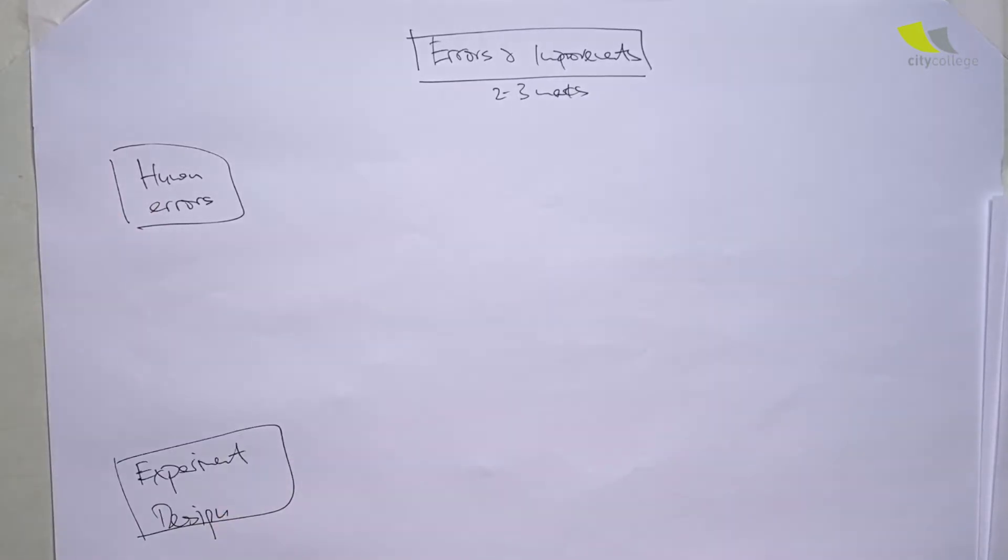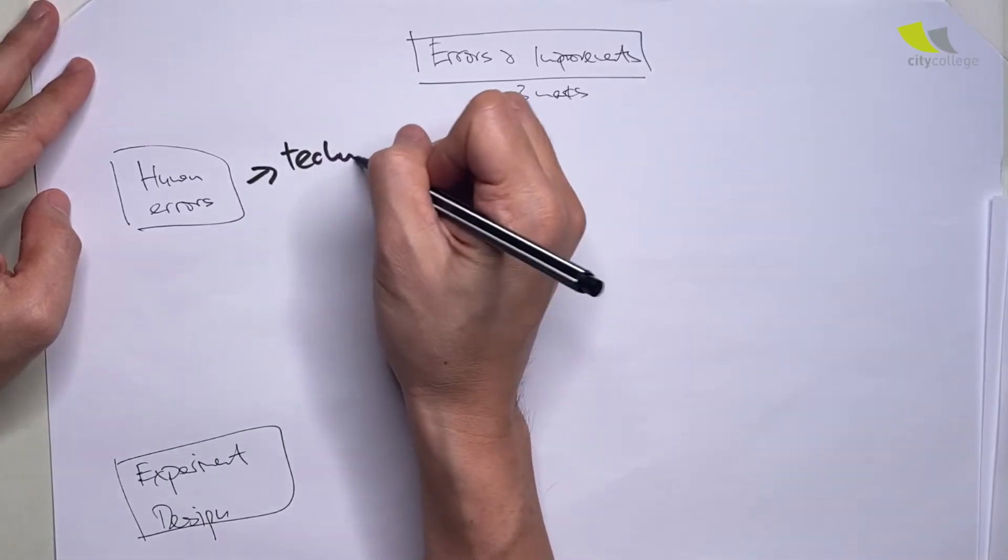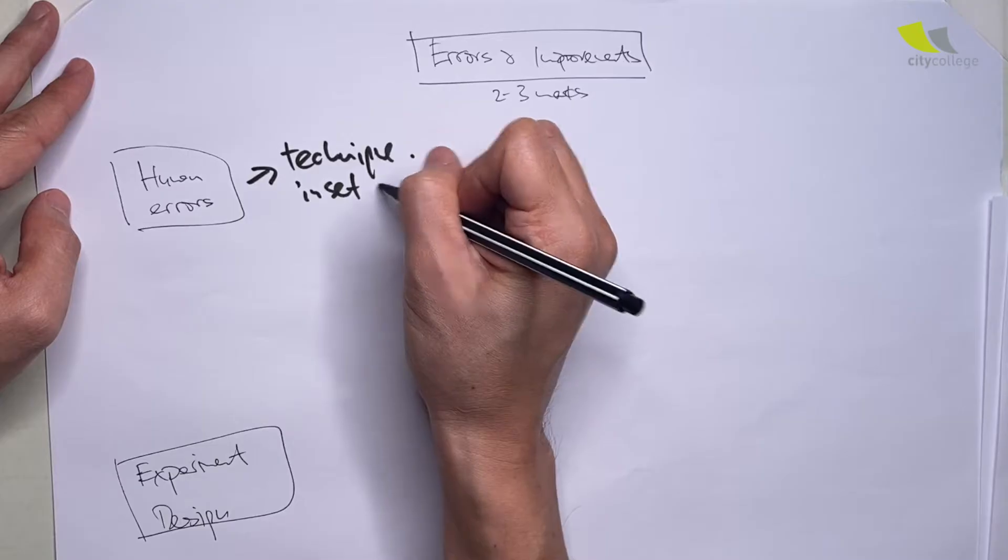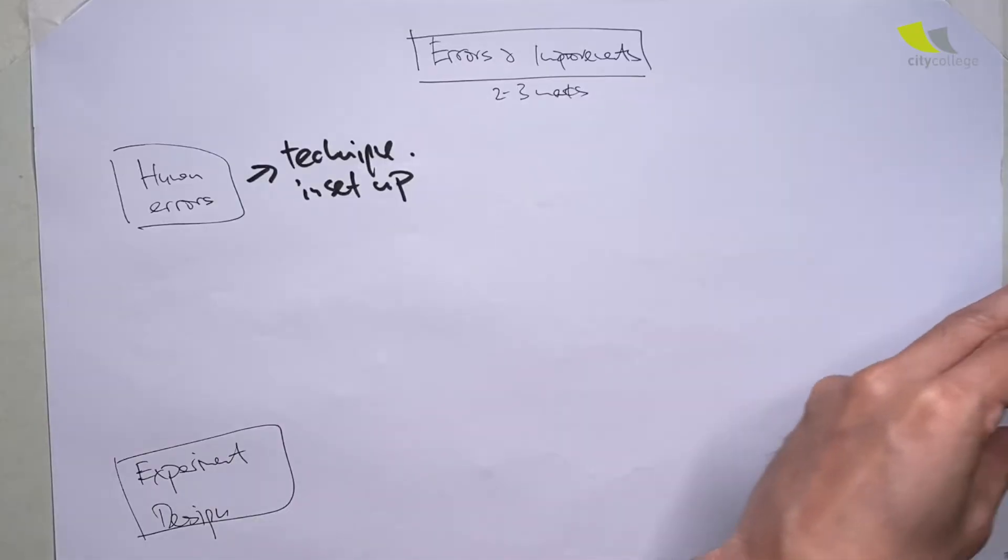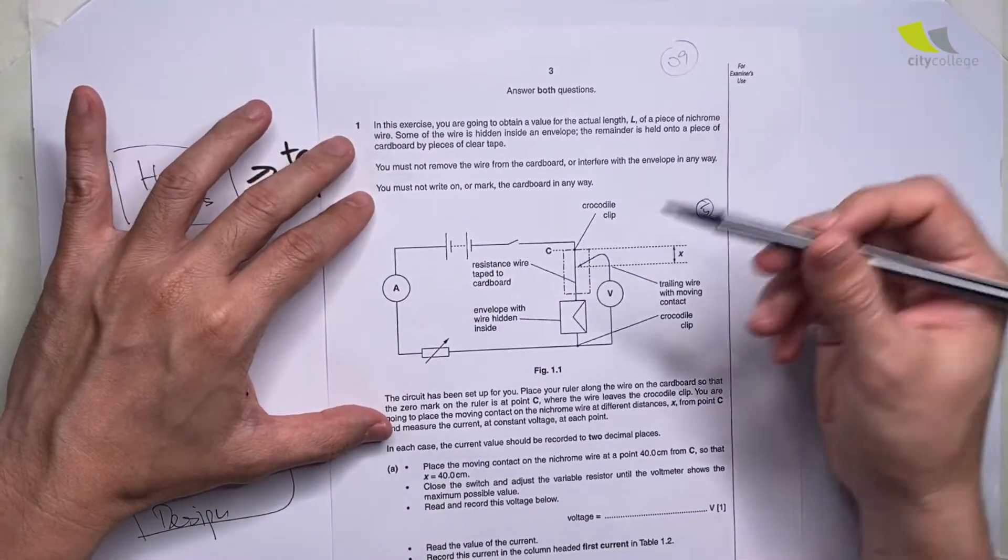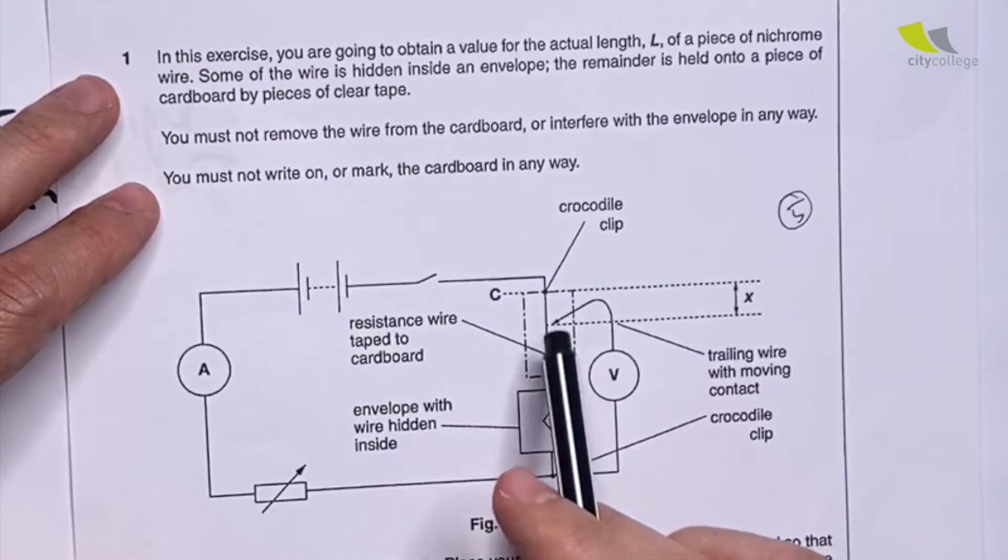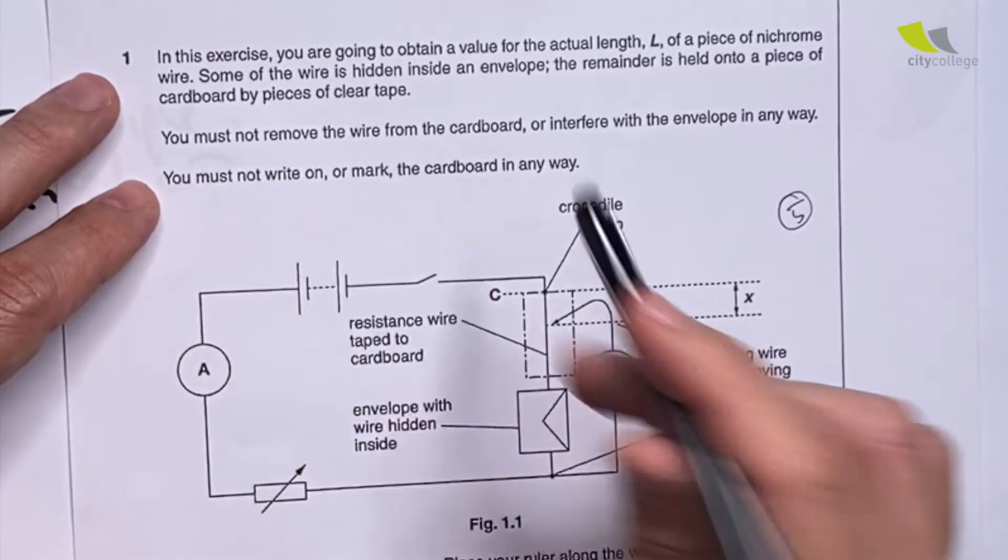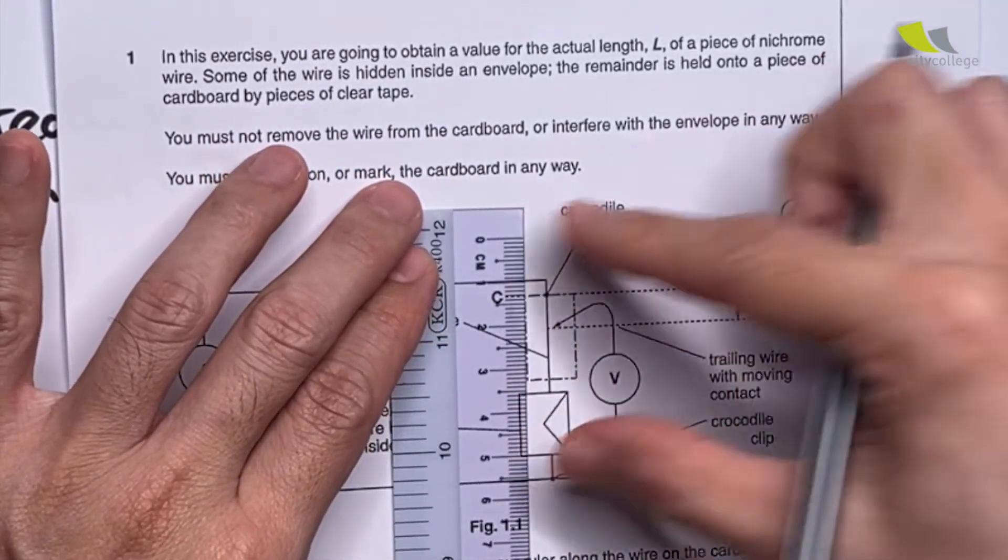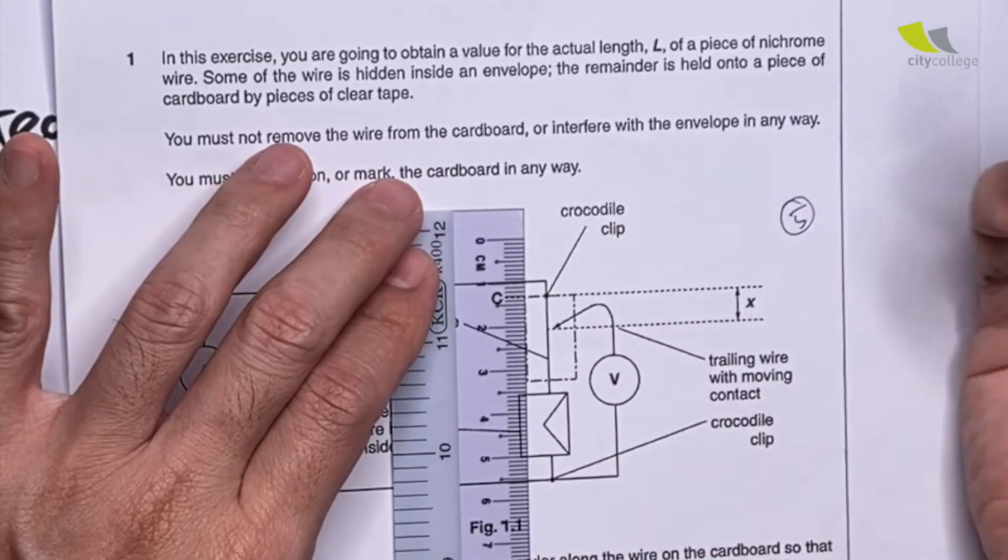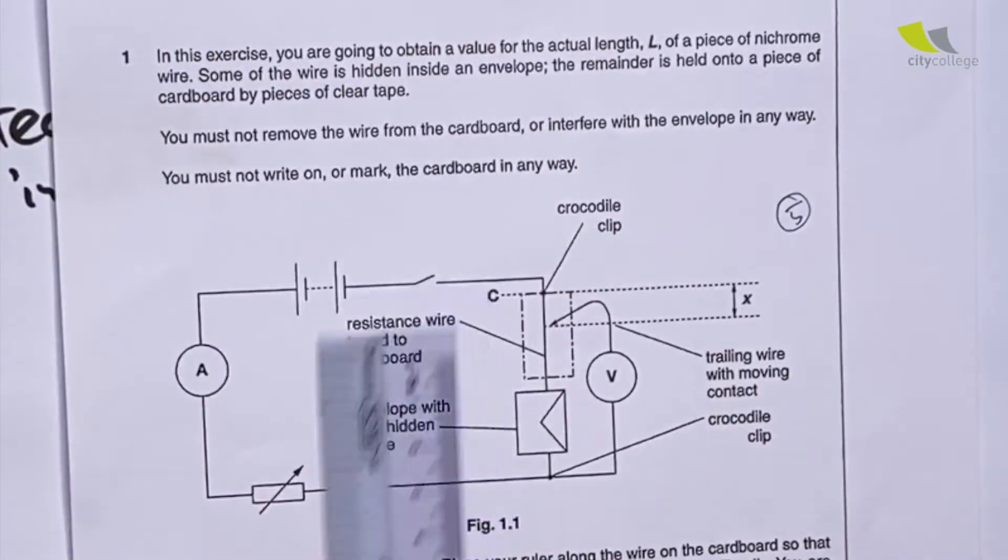For human errors, there is the issue of wrong technique in the setup. This usually has to do with measuring of length. In the 2209 paper, you need to measure the length of this part of wire, but the wire is actually held down by some clear tape. Although your ruler is straight, there's a high chance that the wire is wriggly, so what you measure may not be the actual length. One way to overcome it is to use the potentiometer, tie the wire down, and pull it so that it's taut and straight.